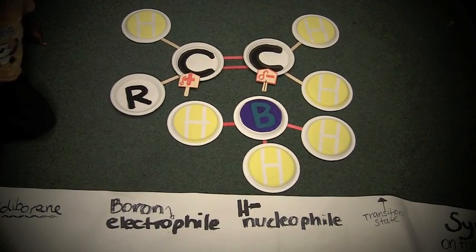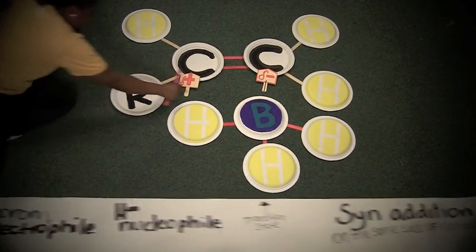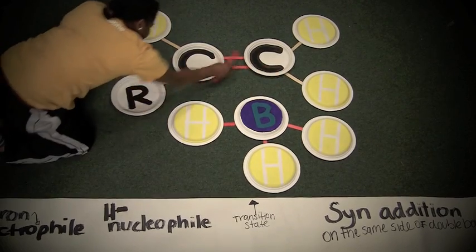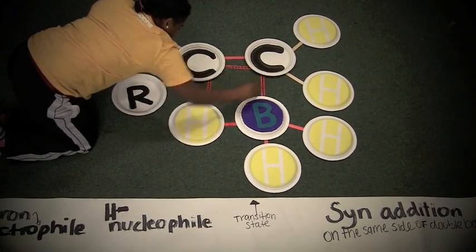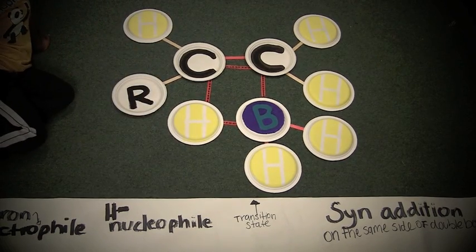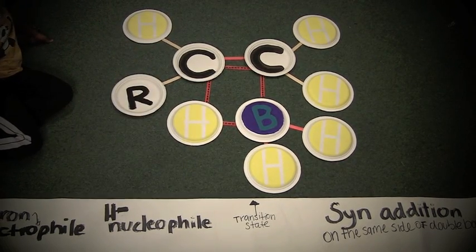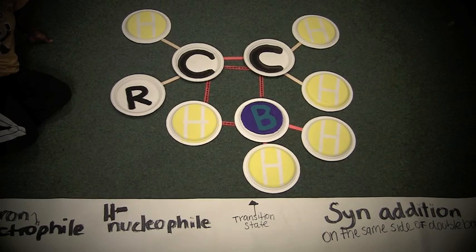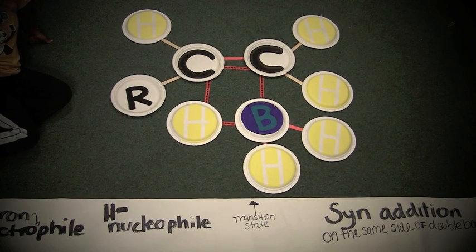So four partial bonds will form. Something to take note of is that syn addition is happening. So the boron and the hydrogen are going to be adding to the same side of the alkene.